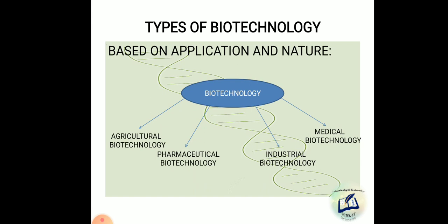Now, based on application and nature, biotechnology is of four types. First is agricultural biotechnology, which deals with agriculture and can also be called green biotechnology. Then pharmaceutical biotechnology, which involves medicines used in the treatment of various kinds of diseases. Third is industrial biotechnology, and fourth is medical biotechnology.